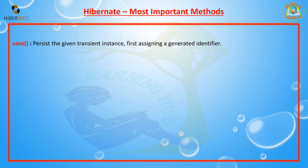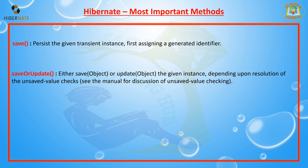The next method is save. The save method persists the given transient instance by first assigning a generated identifier. It saves the object into the database and first assigns a generated identifier, unlike persist which doesn't return anything.